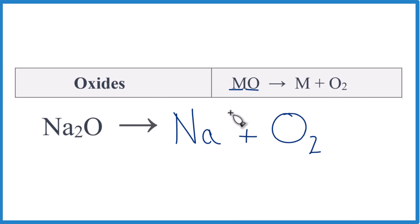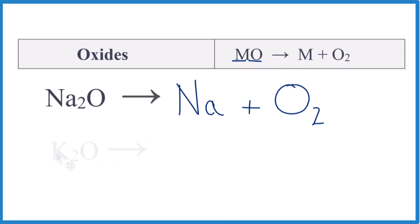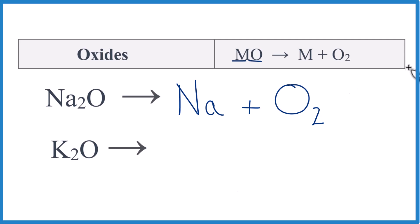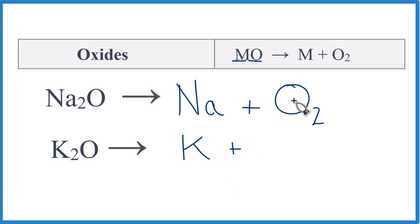In this video I won't balance the equations or write the states — we don't really need that to predict the products. So pause, use the pattern from this example, and predict the products for the decomposition of potassium oxide. Potassium is our metal, then we have the oxygen, so we'll end up with just the elemental potassium plus O₂.